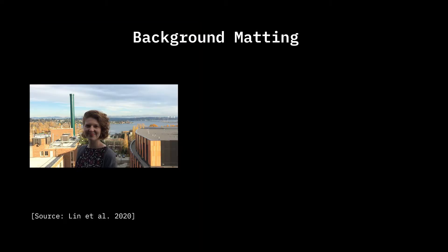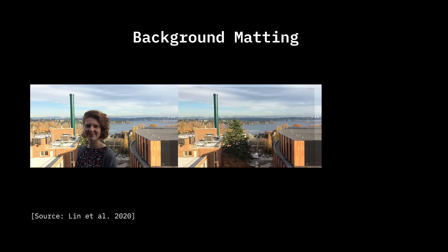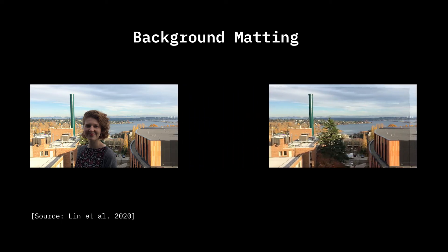There are techniques that avoid the use of trimap, but some of them require an additional background image along with the image or video containing the human. Background images could change from one frame to another, so that serves as a limitation. There is also a high-resolution video matting technique that was recently published which we might cover in a future video. Another method attempts to generate a trimap using a separate model and then uses a matting network. While that is a great idea, having two models becomes computationally expensive.